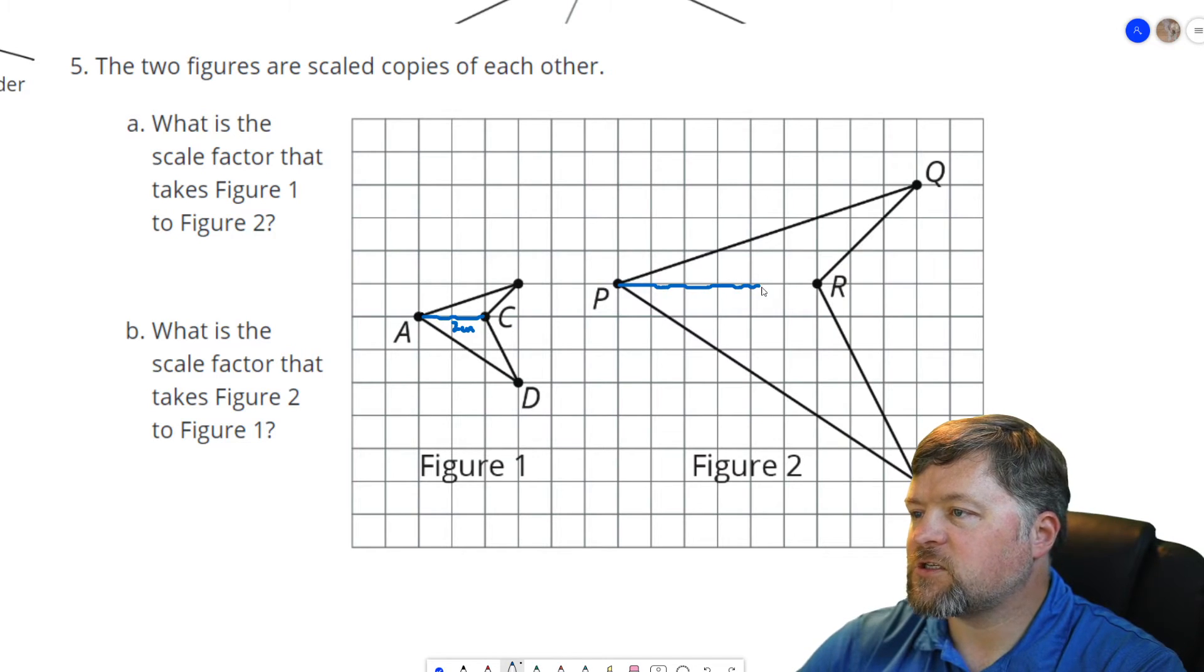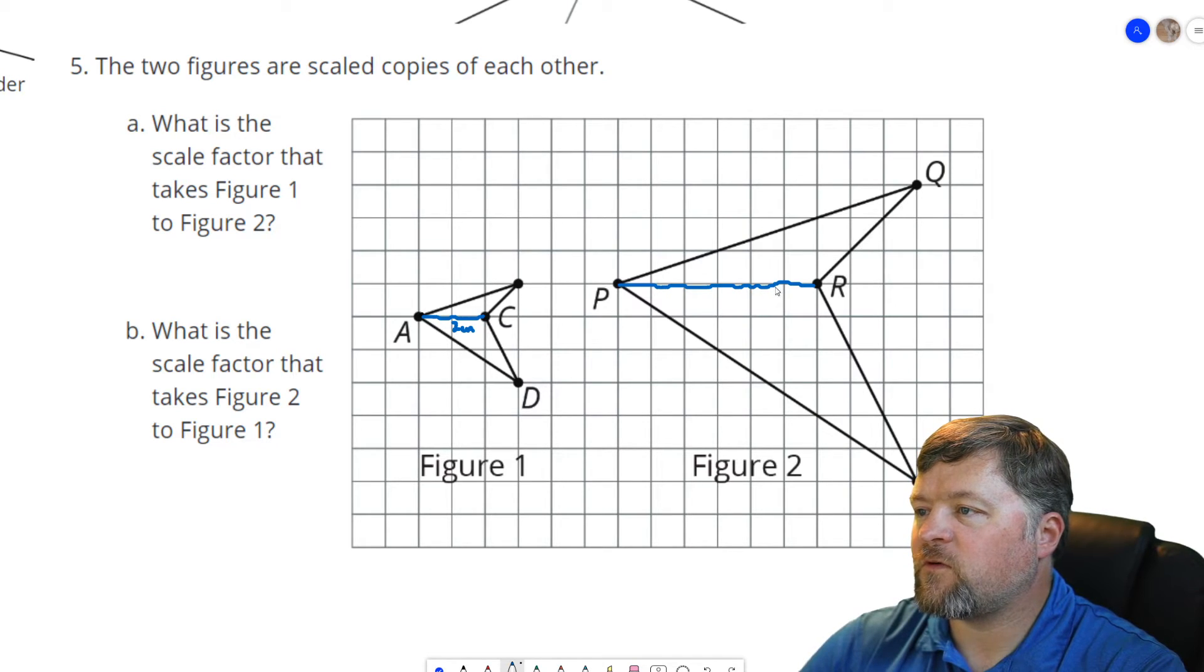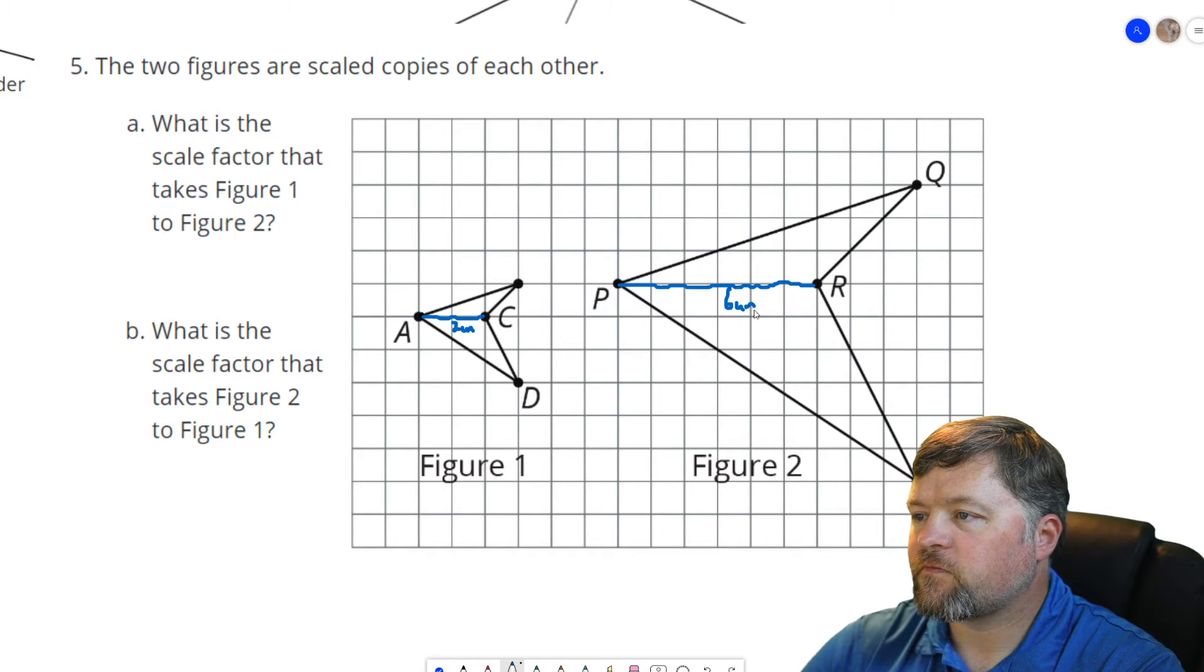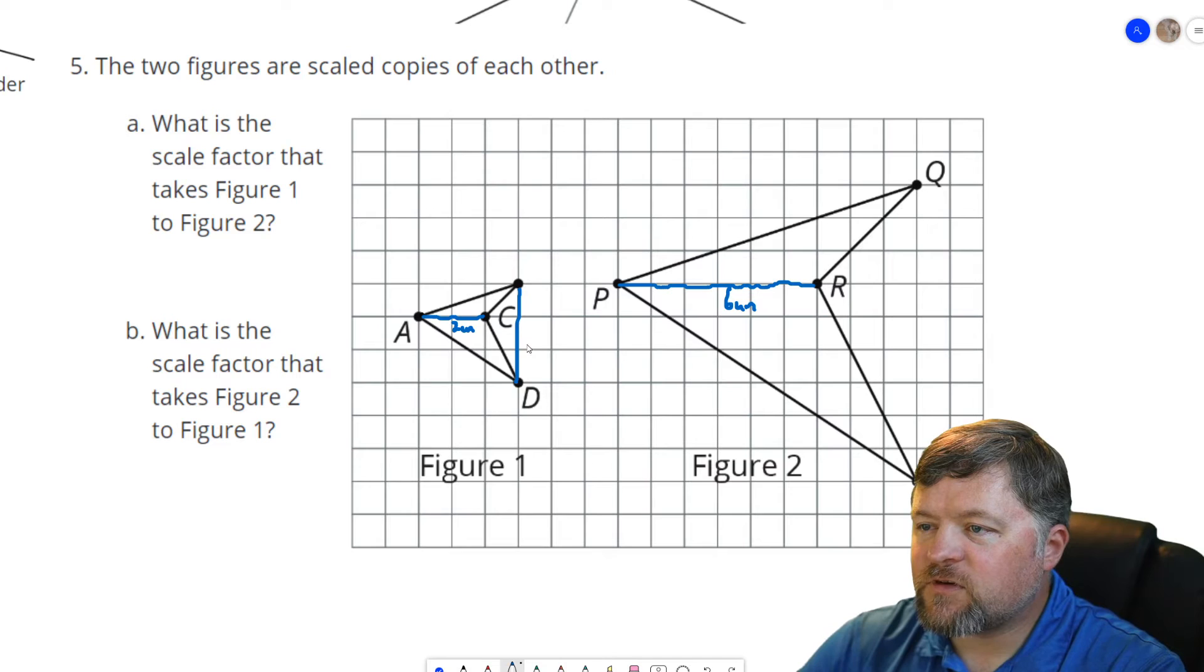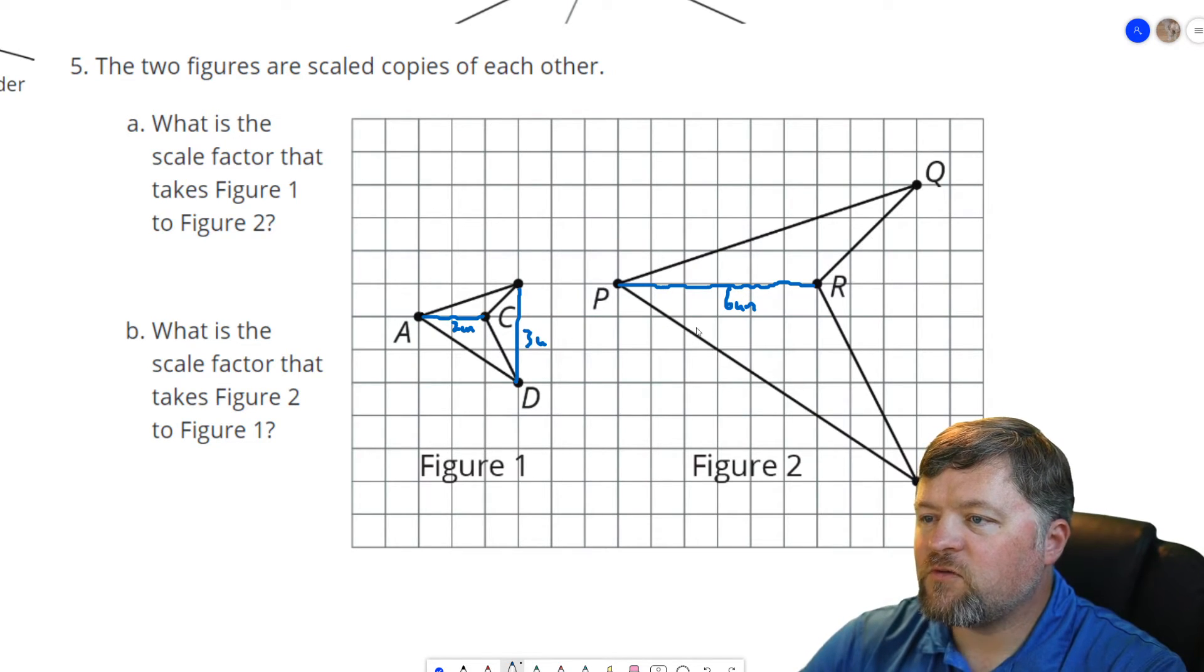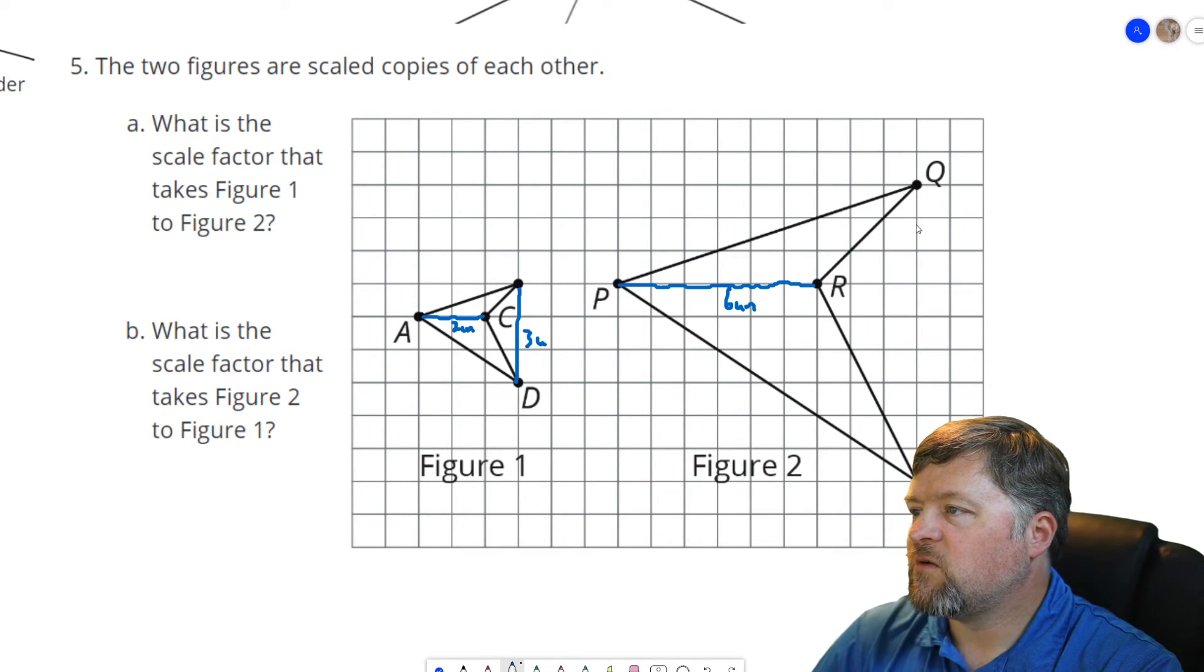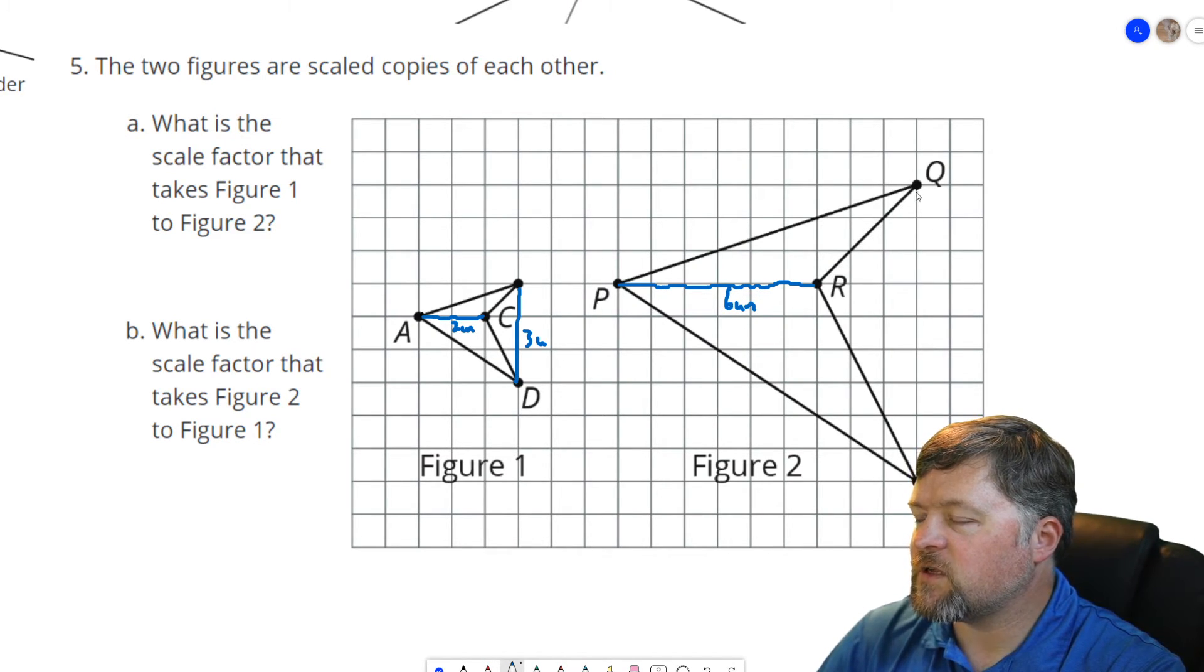And the corresponding one over here is one, two, three, four, five, six units. How tall it is. This one is three units tall. And this one is one, two, three, four, five, six, seven, eight, nine units tall.